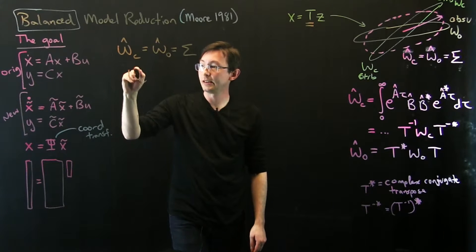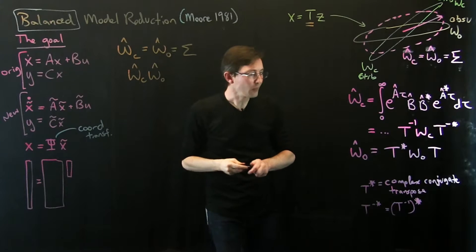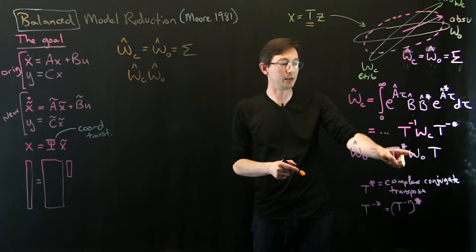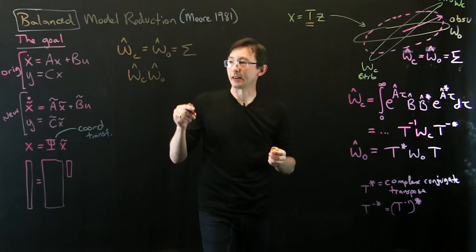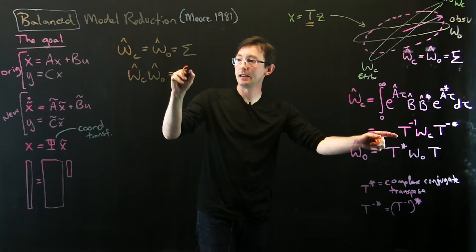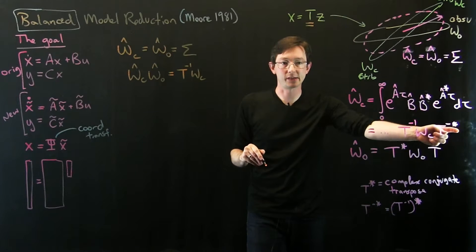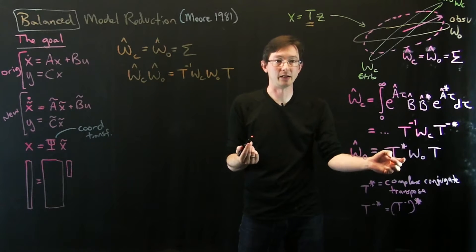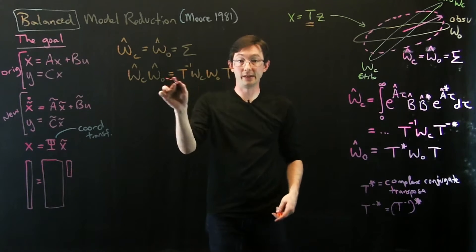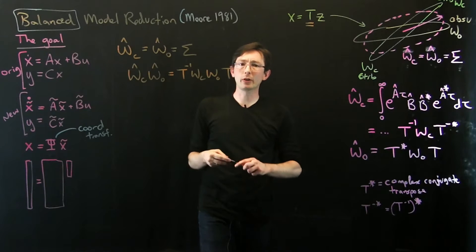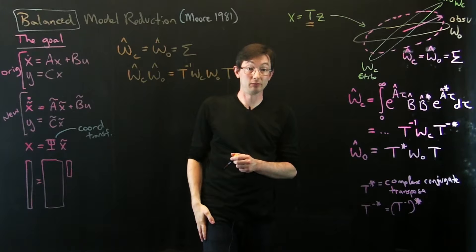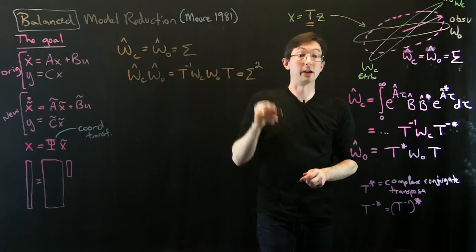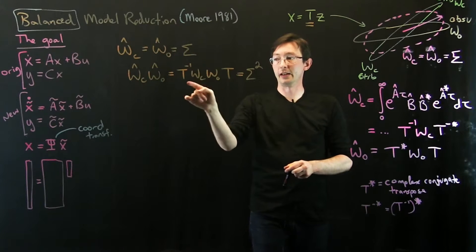Let's multiply wc_hat times wo_hat. Using the transformation formulas, wc_hat times wo_hat equals T_inverse · Wc · T^{-*} · T^* · Wo · T. The middle terms T^{-*} · T^* cancel to the identity, giving T_inverse · Wc · Wo · T. Now plugging in that we want both Gramians to equal sigma, this product should equal sigma squared.